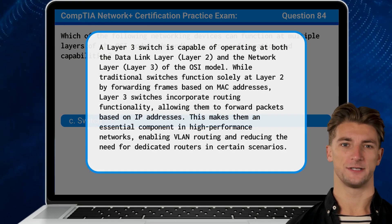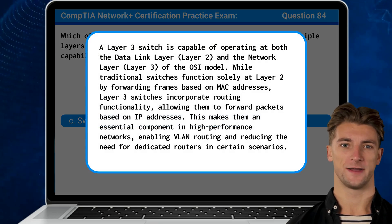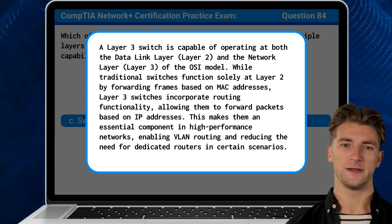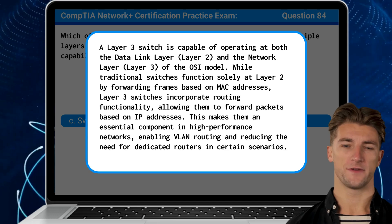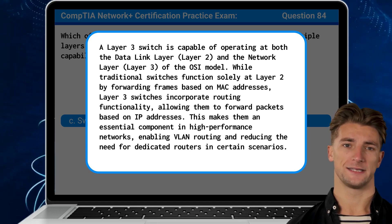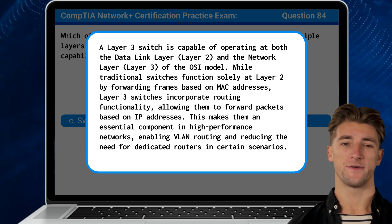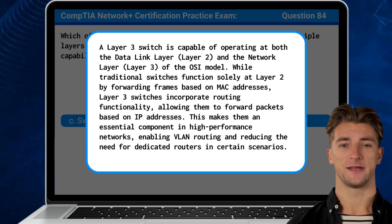A Layer 3 switch is capable of operating at both the data link layer (Layer 2) and the network layer (Layer 3) of the OSI model. While traditional switches function solely at Layer 2 by forwarding frames based on MAC addresses, Layer 3 switches incorporate routing functionality, allowing them to forward packets based on IP addresses. This makes them an essential component in high-performance networks, enabling VLAN routing and reducing the need for dedicated routers in certain scenarios.